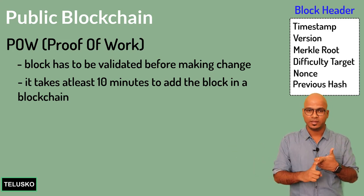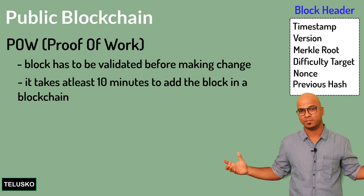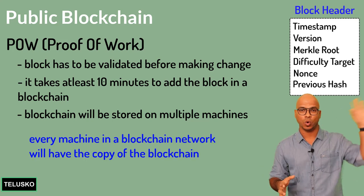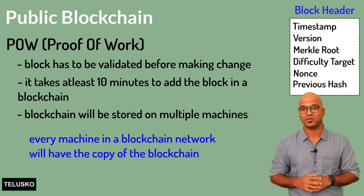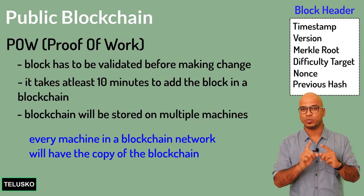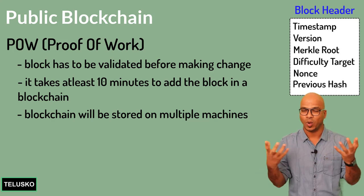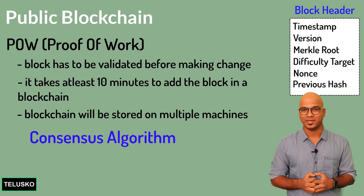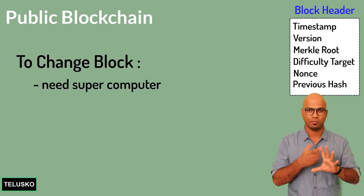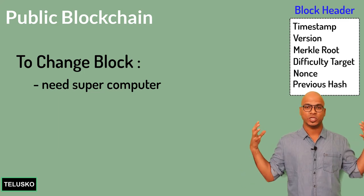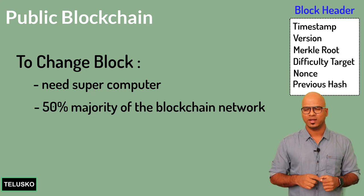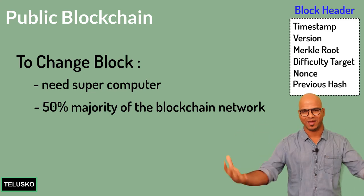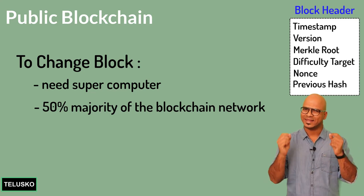Additionally, blockchain is not stored on a single machine — it is distributed across multiple nodes. Anyone can participate in the network, and every participant has their own copy. When adding a new block, it must be verified by everyone through a consensus algorithm. To manipulate the chain, you'd need over 50% majority of the entire network, which requires an enormous amount of GPUs and CPUs — practically impossible to achieve.